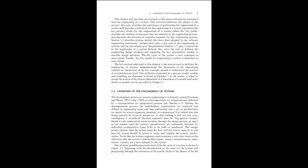This chapter first provides an overview of the issues and process associated with the engineering of a system. This overview addresses the phases of the system's life cycle, describes the importance of performing the engineering of a system well, provides a definition for the engineering of a system, introduces the key process model called the V model, describes the richness of decisions inherent in the engineering process, and discusses the diversity of expertise required for this engineering process. Section 1.3 describes process models adopted by the software engineering community. Architectures play a key role in the engineering of systems and are introduced next.